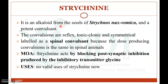The first drug is strychnine. This is an alkaloid from the seed of Strychnos nux-vomica, and it is a potent convulsant. It may produce reflex, tonic-clonic, and symmetrical convulsions, as already discussed in the anti-epileptic chapters. It is also labeled as a spinal convulsant.